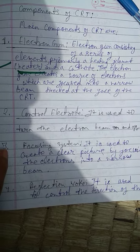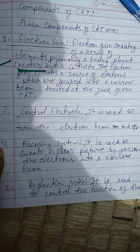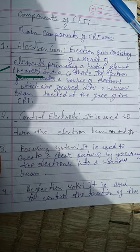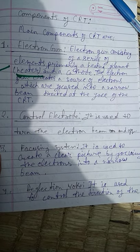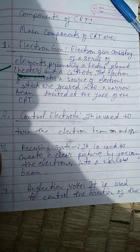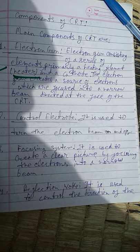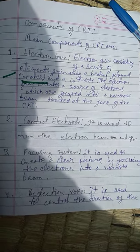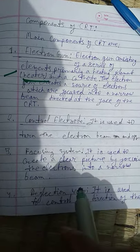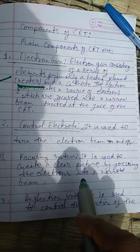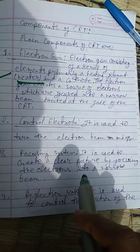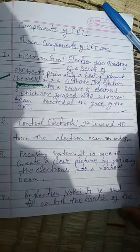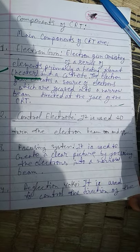The control electrode is used to turn the electron beam on and off. The focusing system is used to create a clear picture by focusing electrons into a narrow beam.